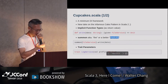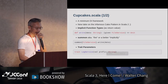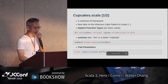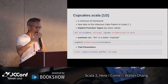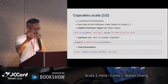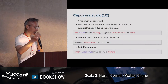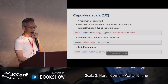summon其實就是Scala 2所謂的implicitly，只是現在改了一個名字叫做summon。當你做summon[FileService]的時候，compiler就會在它的scope裡面找到有沒有FileService這一個given，或者是一個implicit的FileService，然後把它抓過來。trait parameter，現在在Scala 3裡面，trait可以有parameter了。